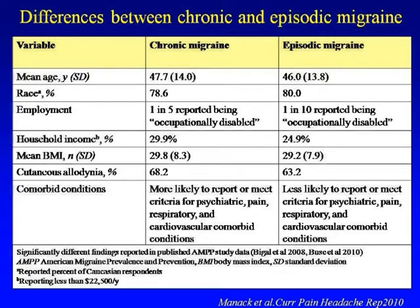We found that psychiatric comorbidities, pain conditions, and cardiovascular conditions are comorbidities and have higher prevalence in chronic migraine compared to episodic. This is derived from two studies from AMPP data.